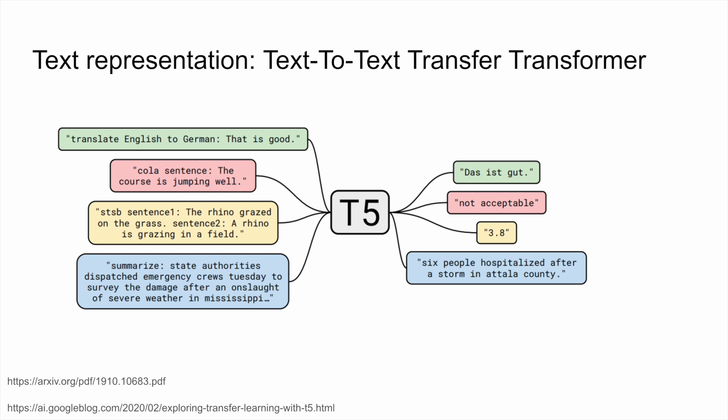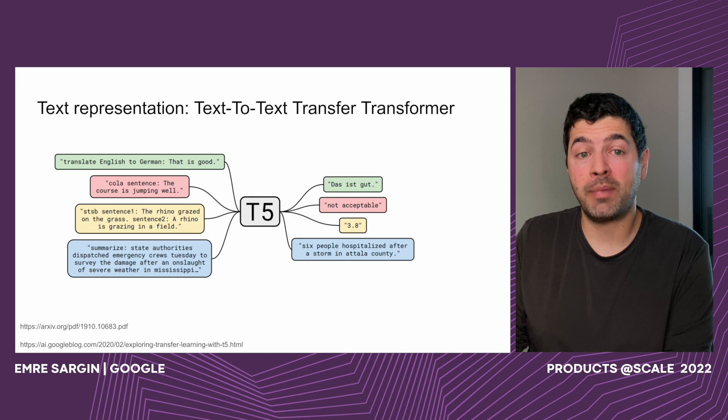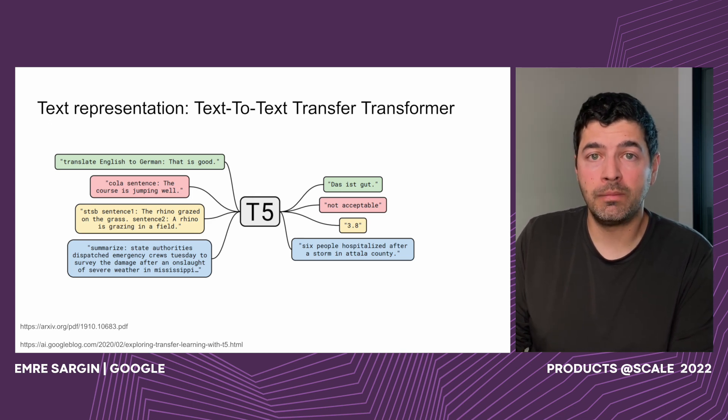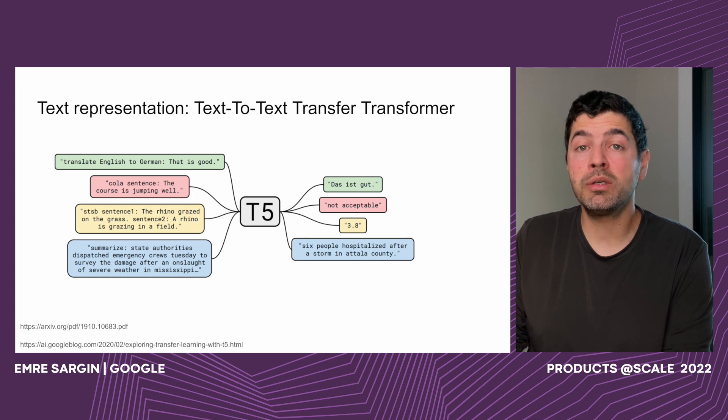The text module can be the text-to-text transfer transformer, referred to as T5, which is one of the latest text models from Google Research. It is trained to predict multiple tasks, including but not limited to translation, sentence acceptability, sentence similarity, and sentence summary. It's important to note that a policy violation can happen in a very short sub-segment of the video. Therefore, both video and text representations can be extracted on sliding segments to better localize the policy violation. Localization not only helps the model be more effective, but can also assist human reviewers in verifying the presence of a violation in that very short segment.